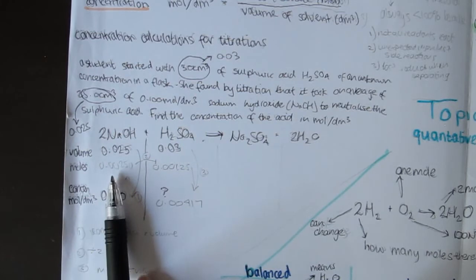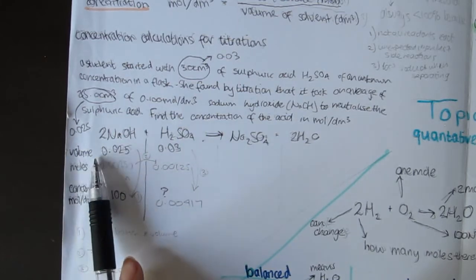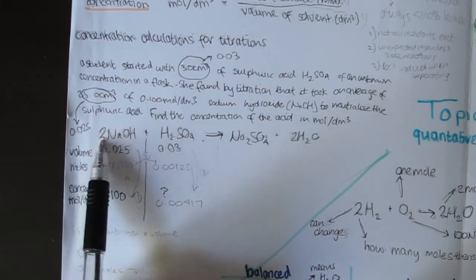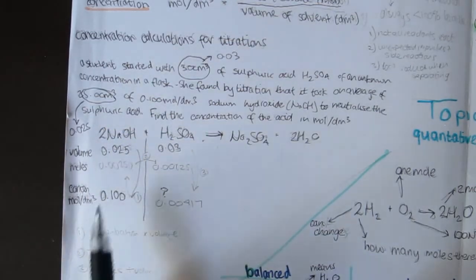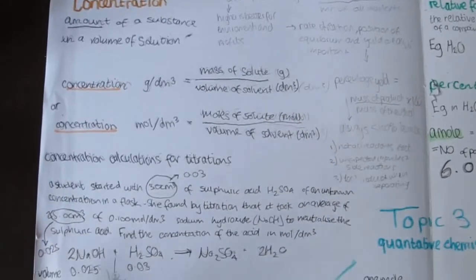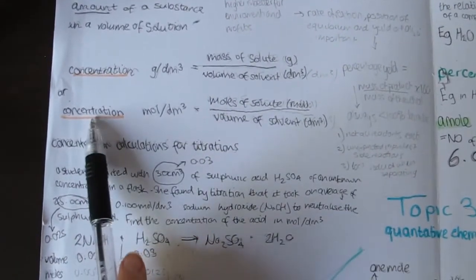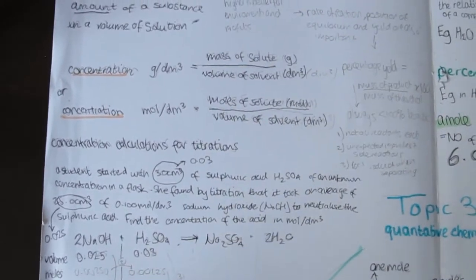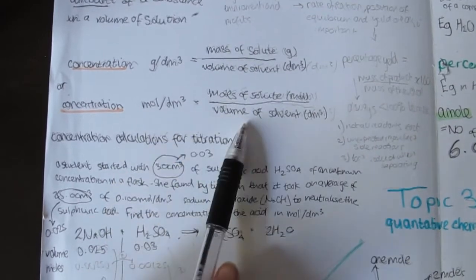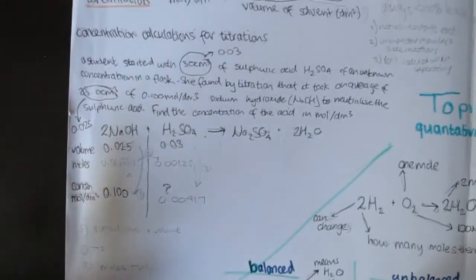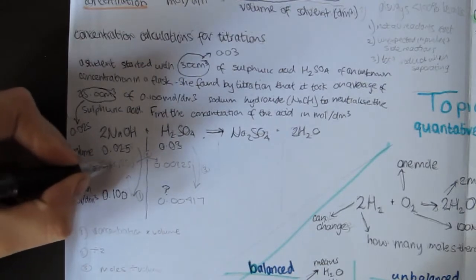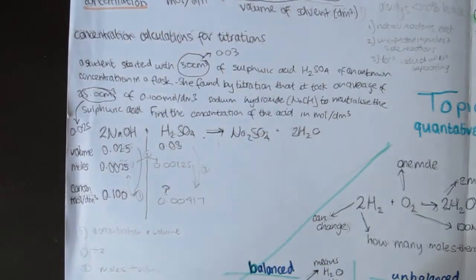Now, step one is to find the number of moles that this volume and concentration of sodium hydroxide actually has in it. We're going to ignore this two bit for the second. We'll come back to that later. So we can see from our equations up here that moles per decimetre cubed, the concentration is the moles divided by the volume. So to get the moles, we need to do the concentration times the volume. So 0.025 times 0.1 makes 0.0025. That is step number one.